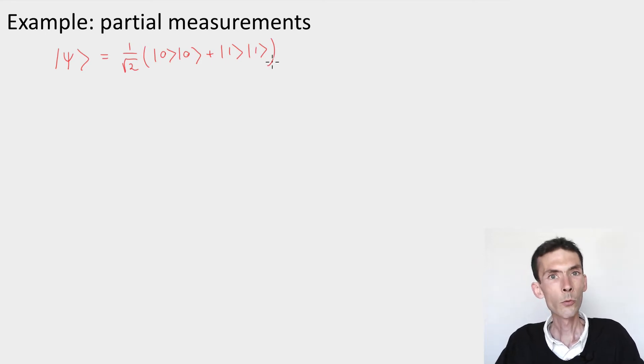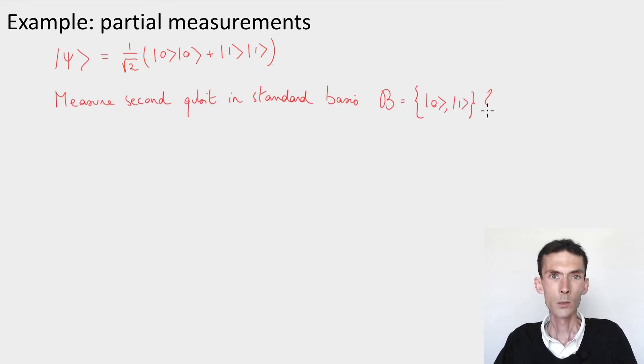Now suppose I want to perform a partial measurement on this state. I want to measure the second qubit in the standard basis, and I want to describe completely what happens to the system. Once we've decided what we wanted to do, the first thing is to figure out what is the POVM that describes the measuring operation that we're trying to perform. And here we're measuring the second qubit in the standard basis, and we're not doing anything to the first qubit.